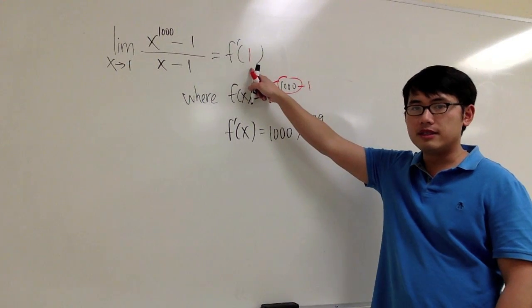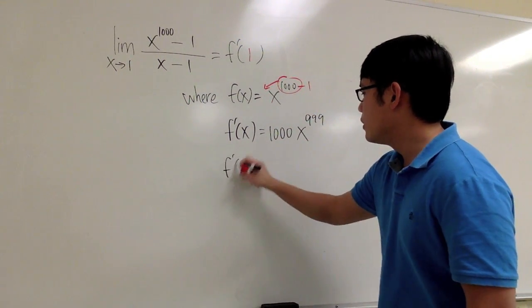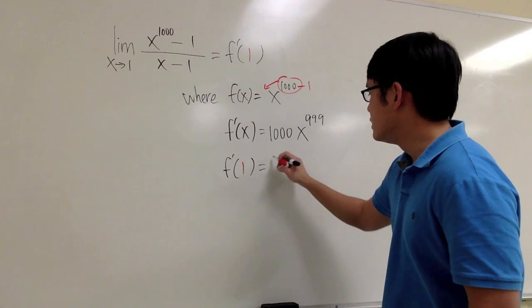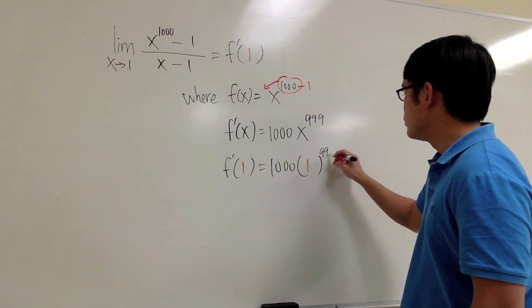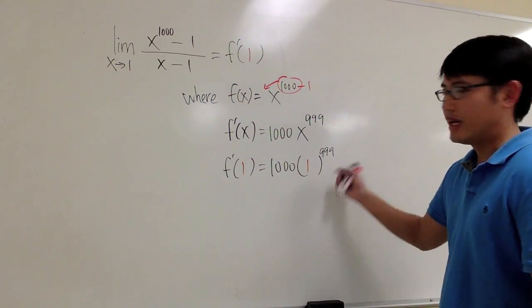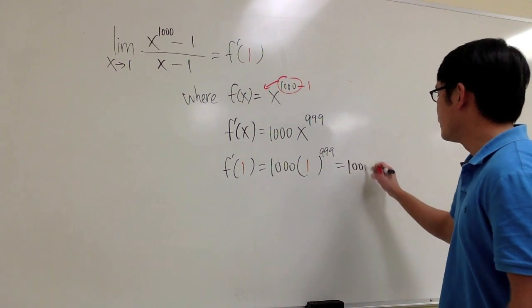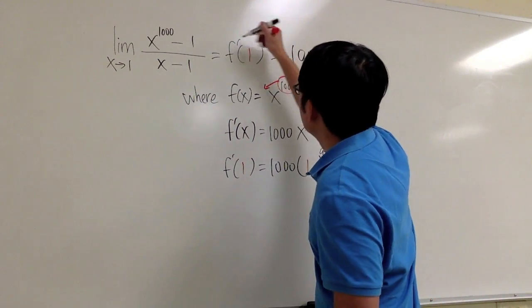I'm looking for when x equals 1, I just need to plug in 1 to x. So f prime of 1 equals 1000 times 1 to the 999, which is of course 1000 times 1. We have just 1000 for the answer. So we know this right here, the answer will be 1000.